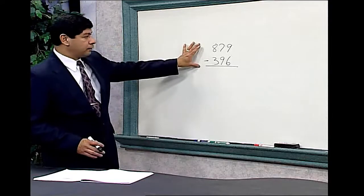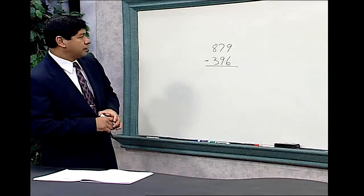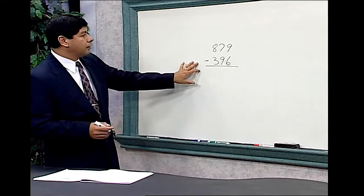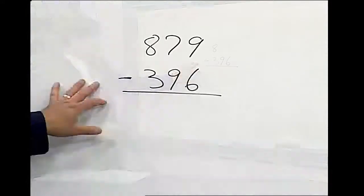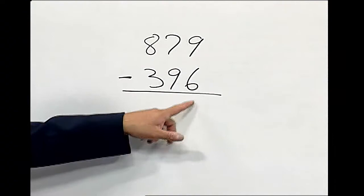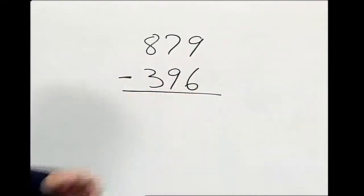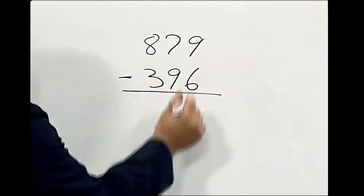So we've demonstrated our numbers up here. We have 879, and from that we're subtracting 396. Let's look at our ones column. We have a six and a nine. We can subtract. That's no problem. Six from nine is three.